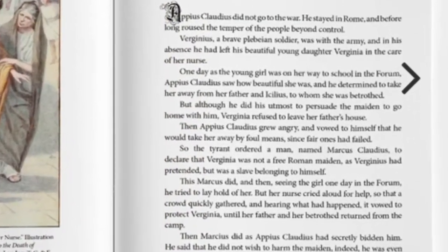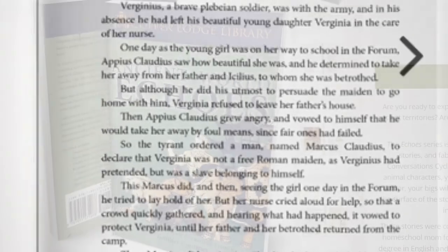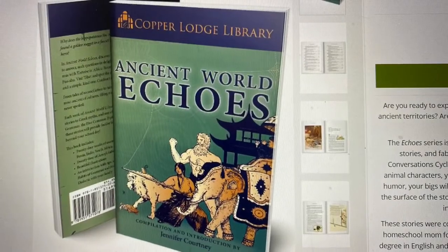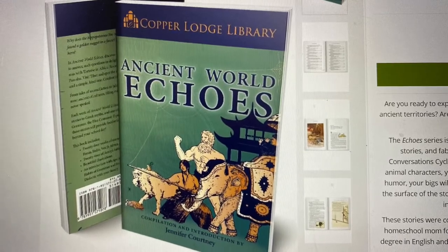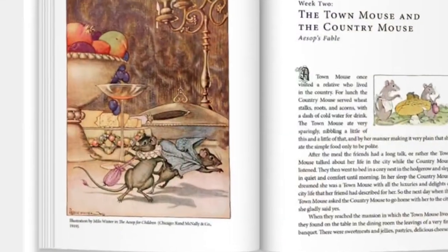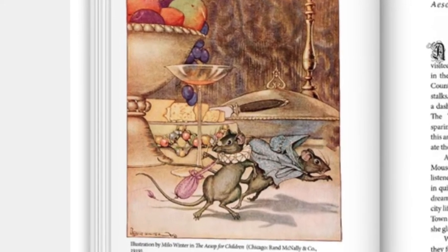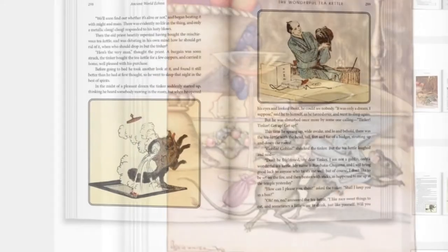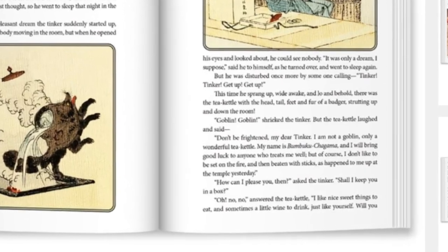This book is designed to be read aloud and discussed with the whole family. And lastly is the Ancient World Echoes. This is a read-aloud resource for your entire family. There are stories tied to the cycle one geography and offer traditional tales from Africa, China, Greece, Japan, Persia, India, and Israel.